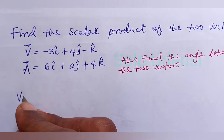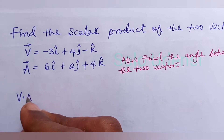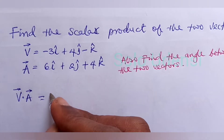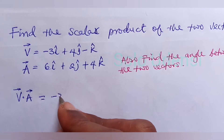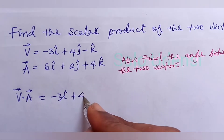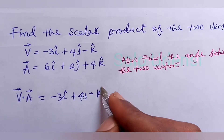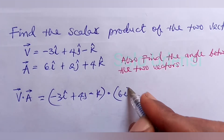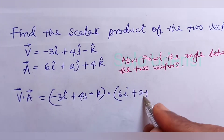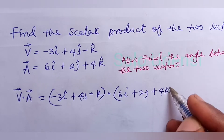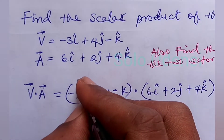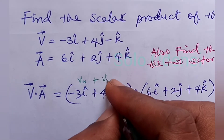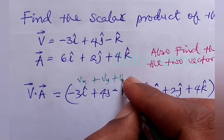V dot A — that is the scalar product — which is (minus 3 î plus 4 ĵ minus k̂) dot (6 î plus 2 ĵ plus 4 k̂). You have to know that this is VX plus VY plus VZ.